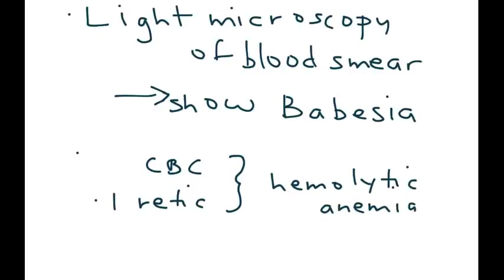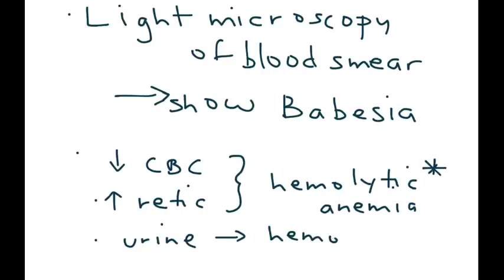The reticulocyte count will be elevated, and the hemoglobin and hematocrit will be decreased. This is an important distinguishing factor separating Babesia from other similar parasite infections. A urine test is also helpful, as it can show hemoglobin in the urine — the hemoglobin released from the ruptured red blood cells.